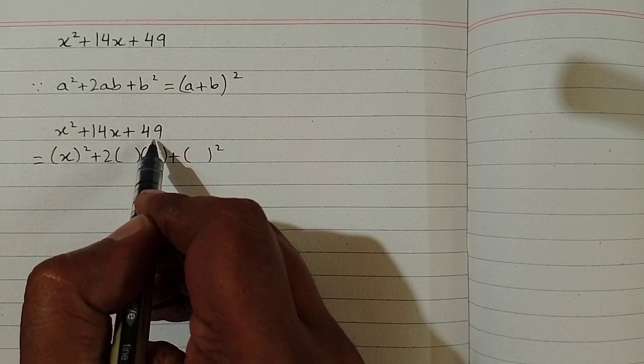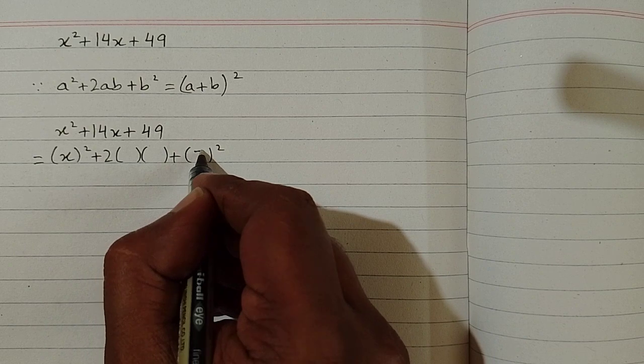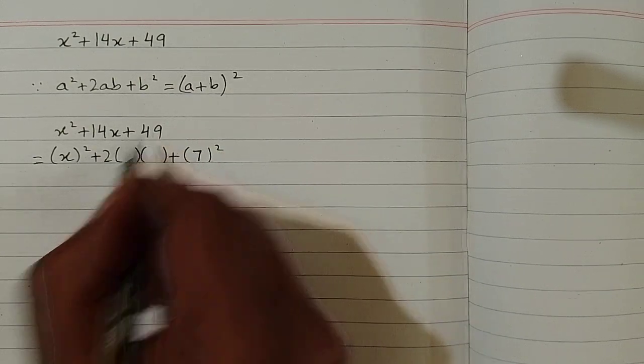And we can see that we have 49 in place of b². So the value of b is 7, because the square of 7 is 49.